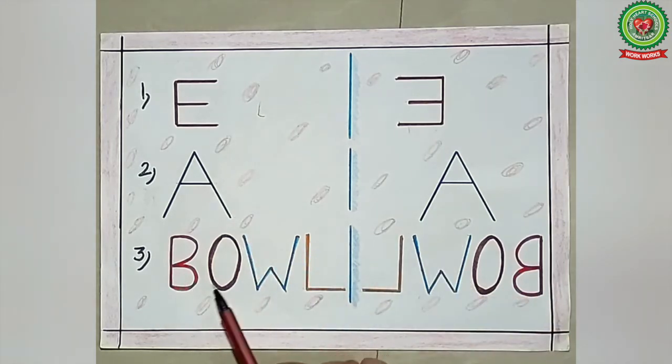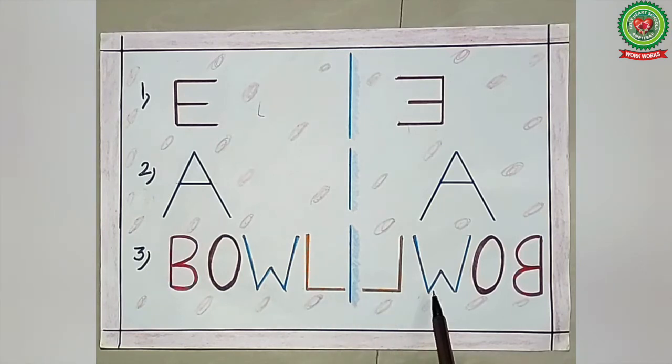Third, BOWL - B O W L. The image of BOWL will be written from the back side: L W O. Right becomes left and left becomes right. The image of L is this. W is symmetrical, so the image of W is W. O is symmetrical, so the image of O is O. B is not symmetrical.